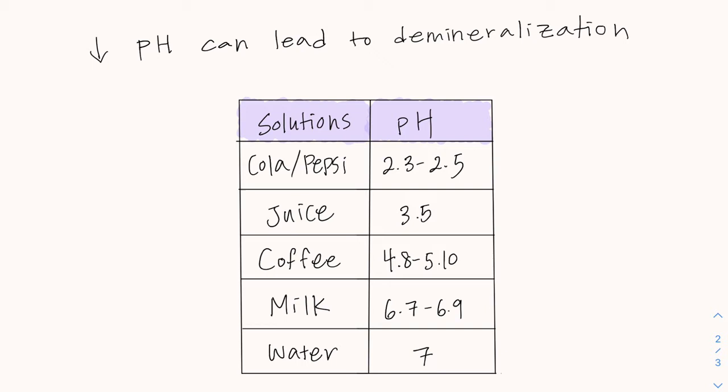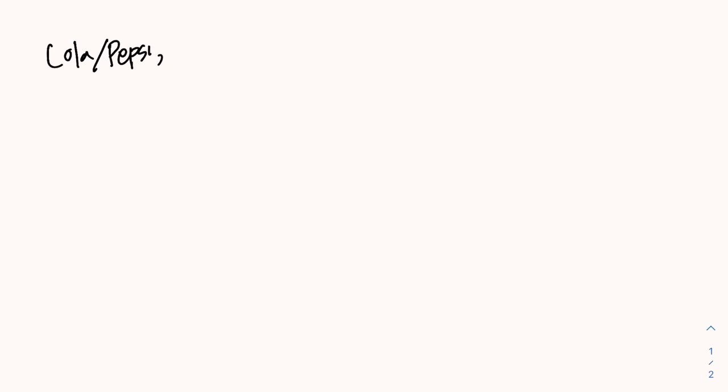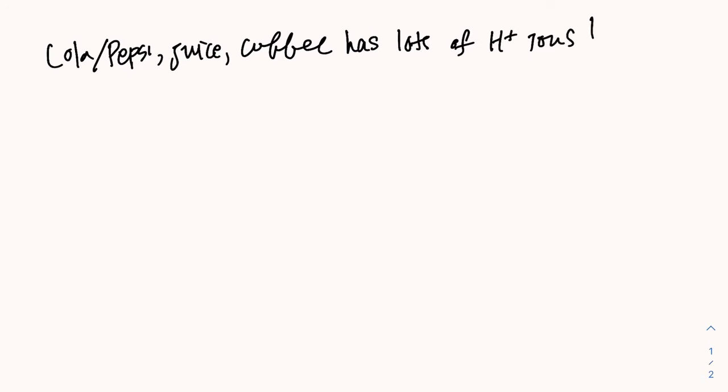Let's take a look at the pH of the solutions that we used for this experiment. Cola or Pepsi has a pH of 2.3 to 2.5, juice 3.5, coffee 4.8 to 5.10, milk 6.7 to 6.9, and water has a neutral pH of 7. The reason why the eggs in the cola, juice, and coffee solution have changed in color is because they have lots of hydrogen ions — in other words, they're very acidic.